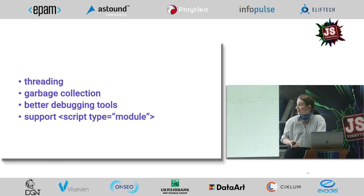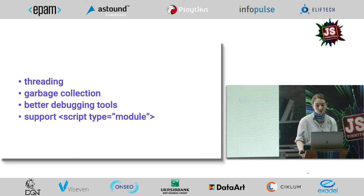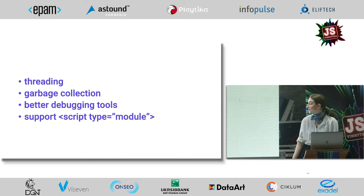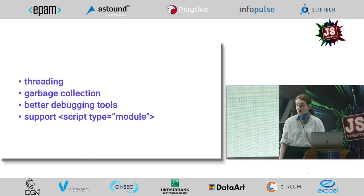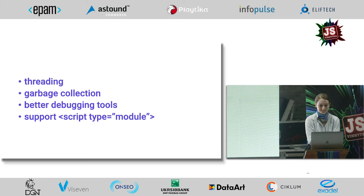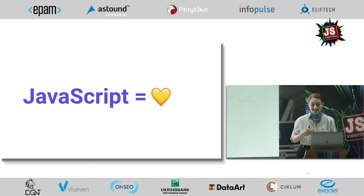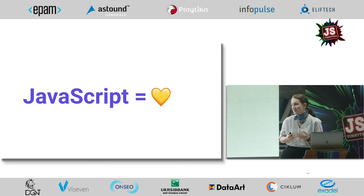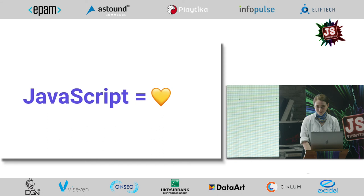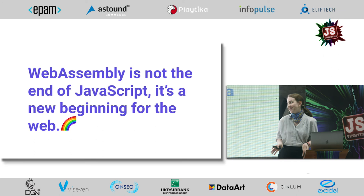WebAssembly obviously works, but it's going to get even better. Browsers are already working on new features. Support for threading is coming — it's already available in Chrome in origin trial and already implemented in Firefox, just not enabled yet. Support for garbage collection is planned sometime next year, which will make it easier to support languages like Java or Go. Another important goal is creating debugging tools which support source maps, allowing developers to easily map their WebAssembly code to the source code. And soon enough, you will be able to import these modules just like any other module using the script tag with type module. JavaScript is a great language — it's flexible enough to build almost anything, and it will still have its place in web development. Those few gaps that it can't handle well will now be handled by different languages compiled to WebAssembly. It's really not the end of JavaScript — I think it's a new beginning for the web.